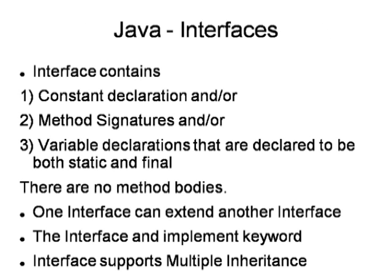A Java interface contains constant declarations, method signatures, and variable declarations that are declared both static and final, along with nested types. There are no method bodies in an interface. An interface can extend another interface. The 'interface' keyword is used during creation and the 'implements' keyword is used for usage of that interface. Most importantly, interface supports multiple inheritance — that is how Java fulfills the need of multiple inheritance even though classes don't support it.